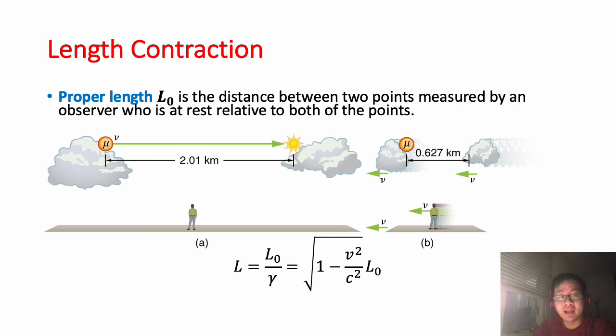Similar to time dilation, we have the term length contraction. Length contraction: L₀ is the distance between two points measured by an observer who is at rest relative to both of the points. As the picture shows, when we move with a speed not too much, we see the distance is not changed. But if something moves really, really fast, the distance will shrink and become smaller and smaller. That's another relativity.